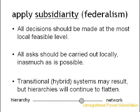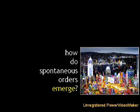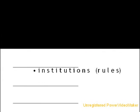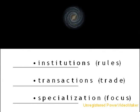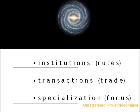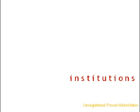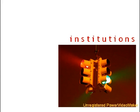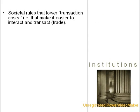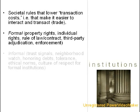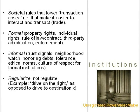If spontaneous orders are more scalable and more sustainable forms of order, how is it that they emerge? Spontaneous orders emerge by virtue of three factors: institutions, transactions, and specialization. First, institutions — these social rules are basic to any spontaneous order. The other two factors, transactions and specialization, depend upon institutions. Institutions are societal rules that lower transaction costs, making it easier to interact and trade. Institutions fall into two basic types: formal and informal.